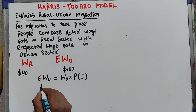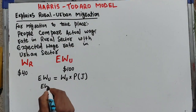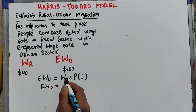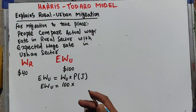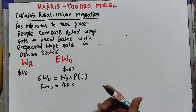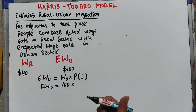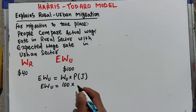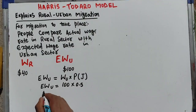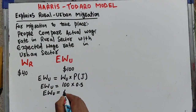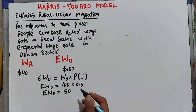So the expected wage rate in the urban sector equals the actual wage rate in the urban sector — in this example $100 — times the probability of getting a job. Let's suppose the probability is 50%, or 0.5. That means the expected wage rate in the urban sector equals $100 times 0.5, which is $50.